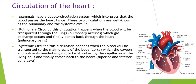The pulmonary circuit is when blood is transported to the lungs. In the pulmonary circuit, blood is transported to the lungs by the pulmonary arteries, where gas exchange occurs, and finally comes back to the heart by the pulmonary veins. The name of each vessel is related to its circuit.